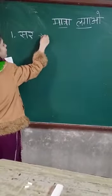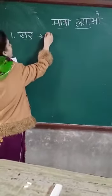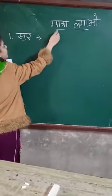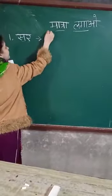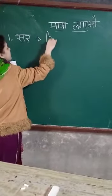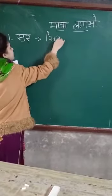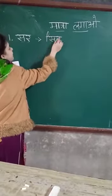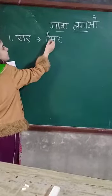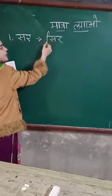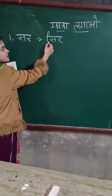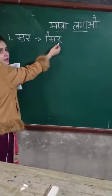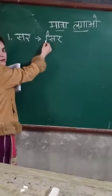Now we are going to add the matras. First is Sir, okay? Sar — wo chhoti ee ki matra — si, R, Sir, okay?